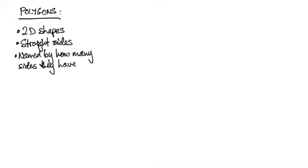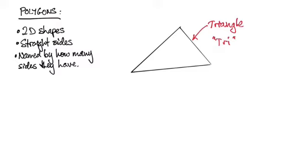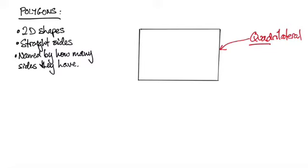So they are, first of all, they're two dimensional shapes. They have straight sides and we name them by how many sides they have. So for example this is a polygon. We know it also as a triangle. We use the prefix tri because that represents three. Here's another one you've probably seen, quadrilateral. Quad meaning four because it's got four sides, but they're both polygons. They're both two dimensional shapes with straight sides.